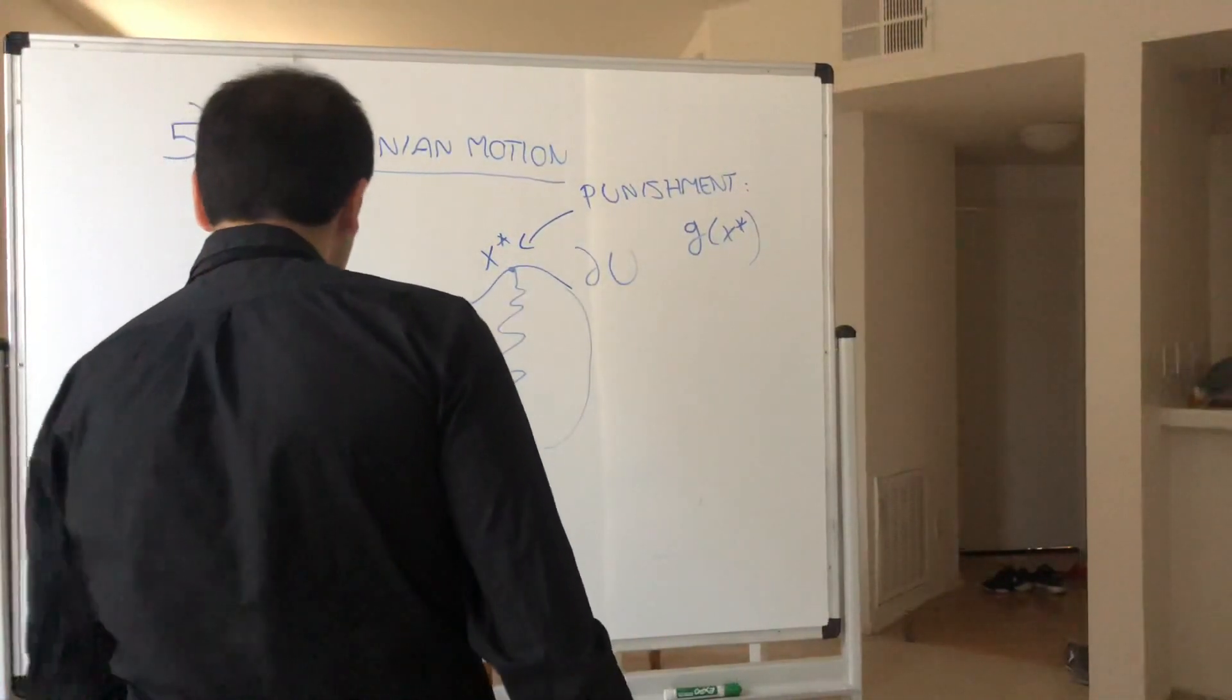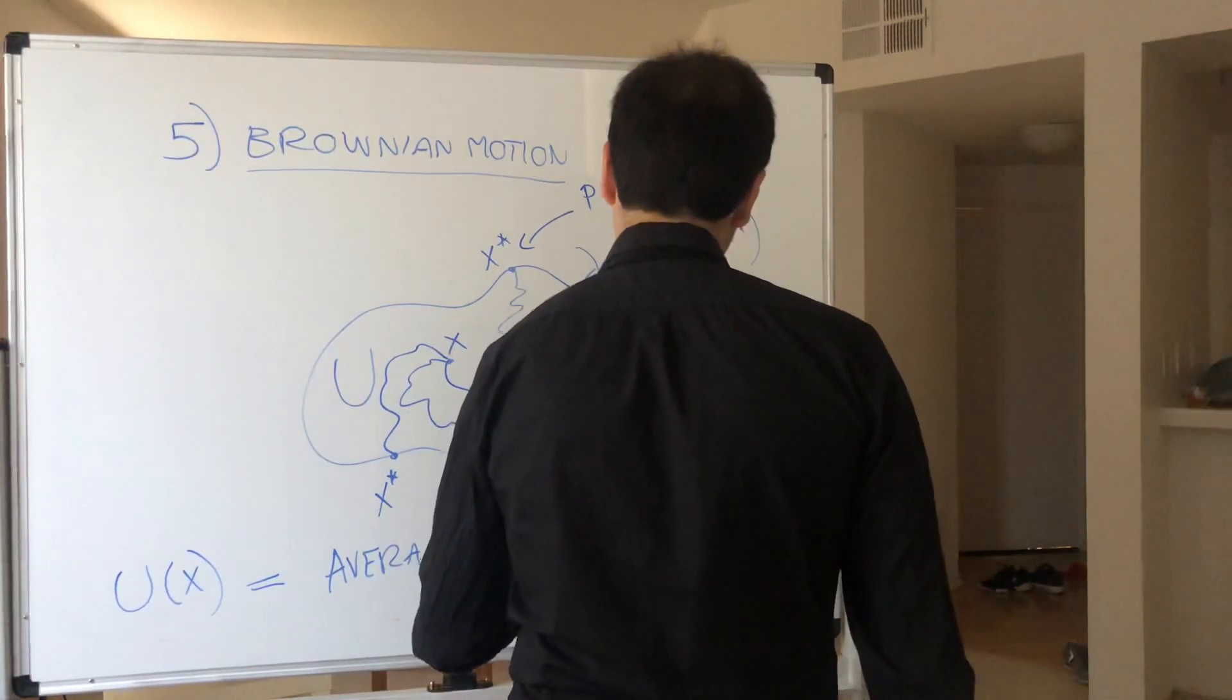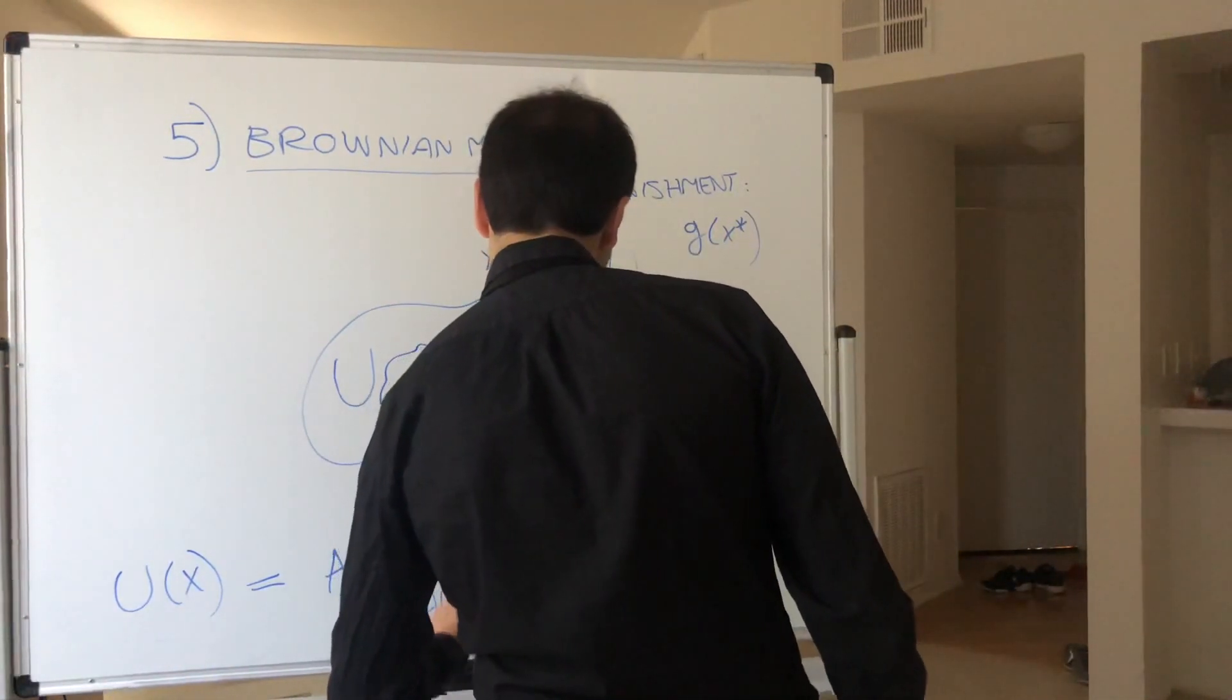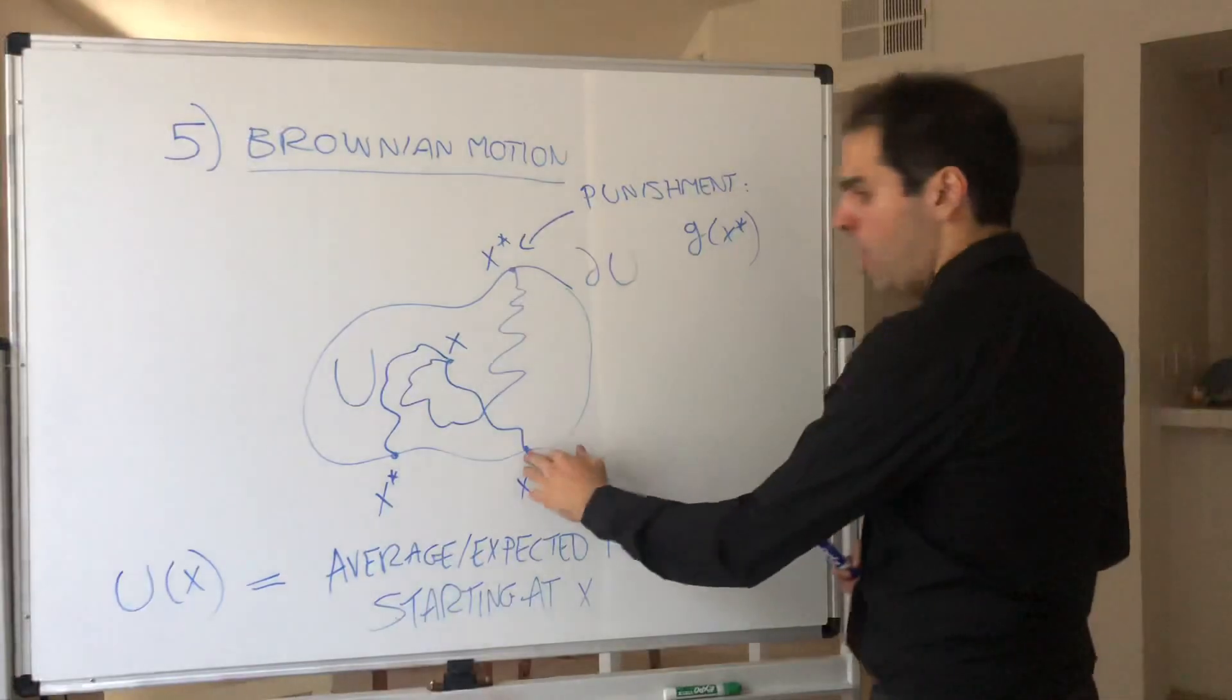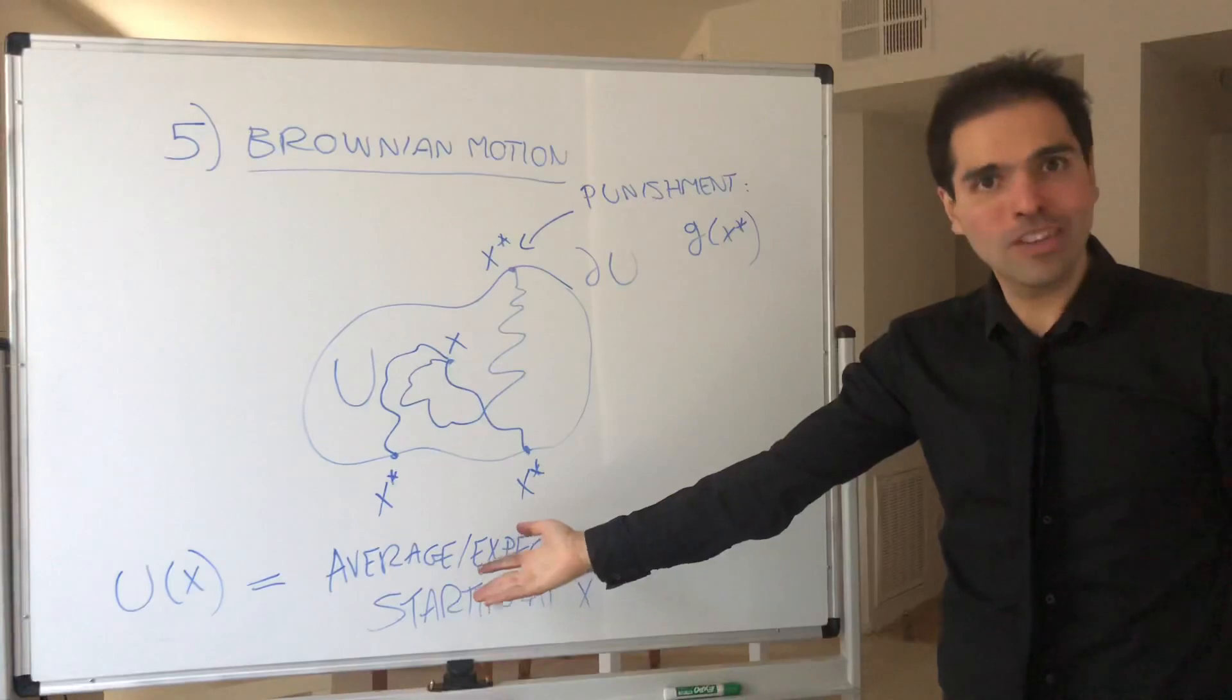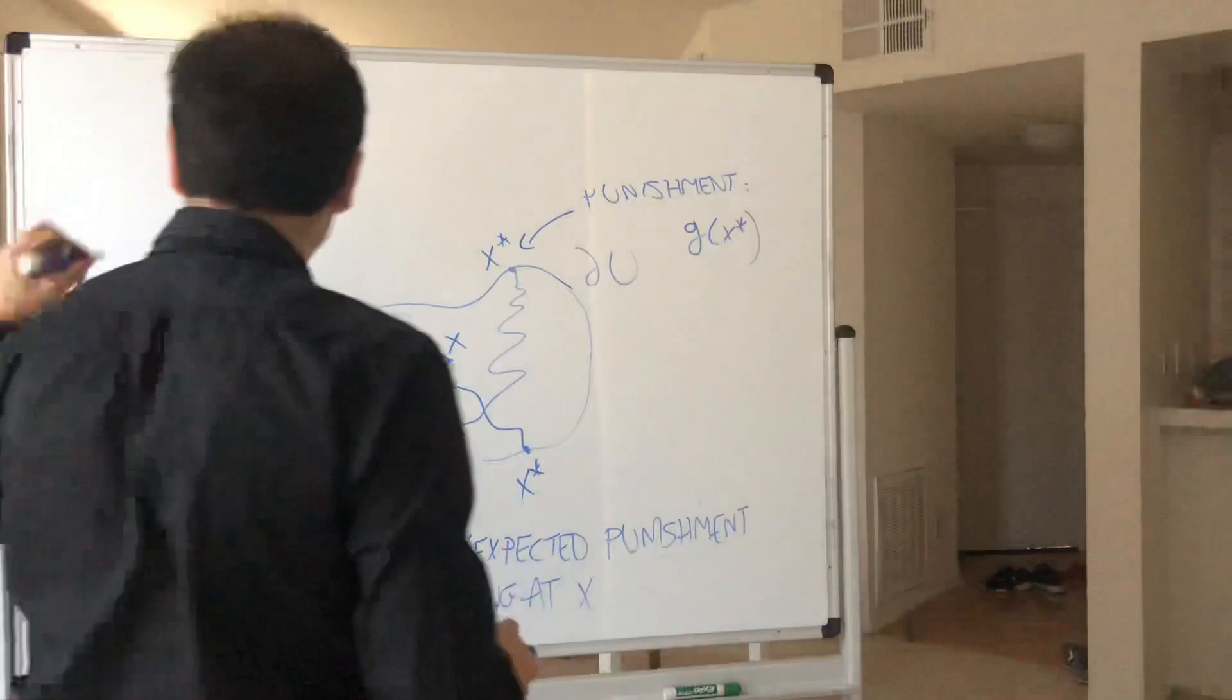Yet the cool thing is you can still extract the deterministic outcome from this by taking expected values. So let u of x be the expected or average expected punishment starting at x. And in particular, notice if you're already at the boundary, your punishment is exactly g of x star. So u of x is just g of x.